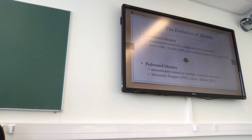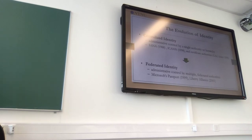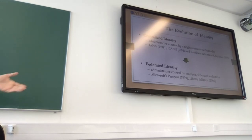Then we had federated identity, where administrative control is by multiple federated authorities. The first example is Microsoft Passport, created in 1999. They constructed a federation of identity organizations so you could use your identity more widely across multiple organizations. But still, the central part was Microsoft itself, so it's still close to centralized identity.